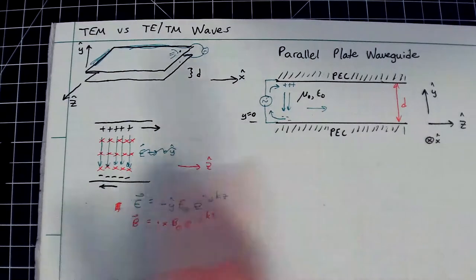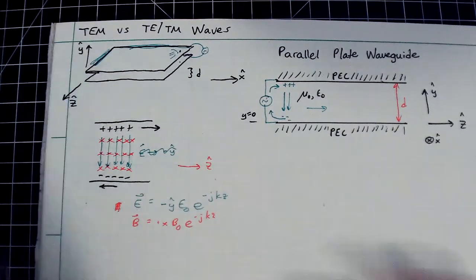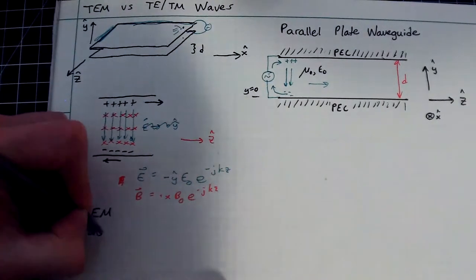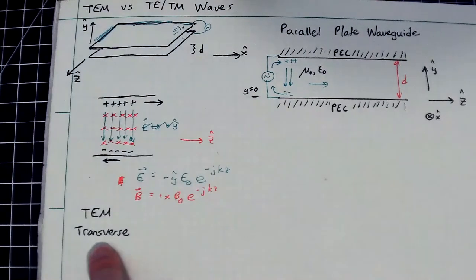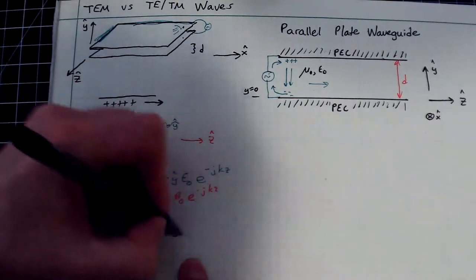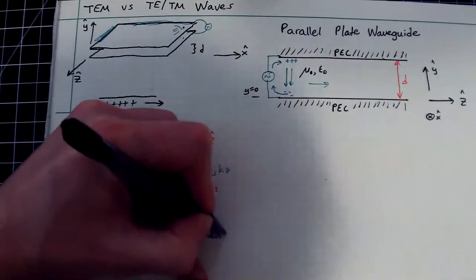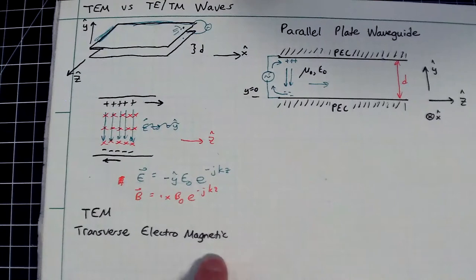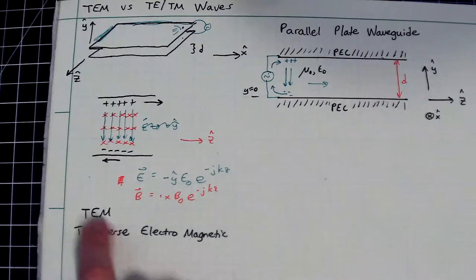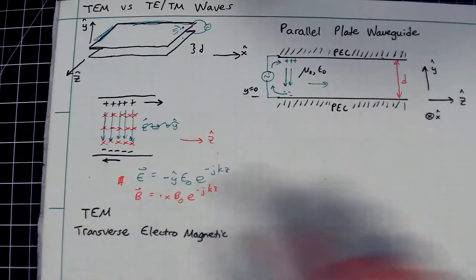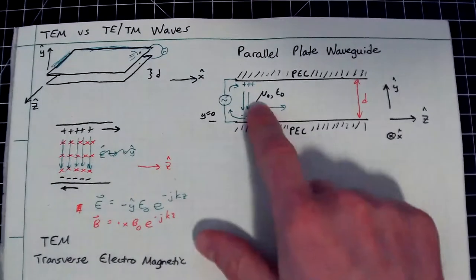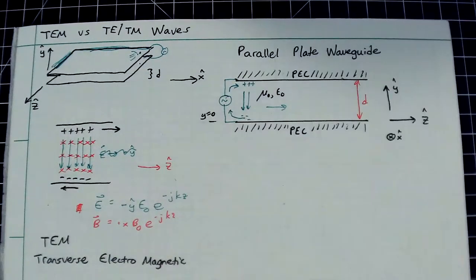Everything is at perfect right angles — the electric field points down, the magnetic field points into the page, and everything propagates in the Z direction. This is where the phrase TEM comes from: transverse electromagnetic wave. Both the electric and the magnetic fields are transverse to the direction of propagation, giving us TEM.